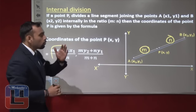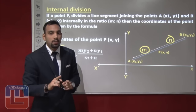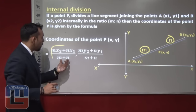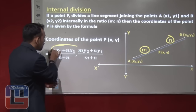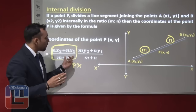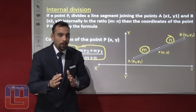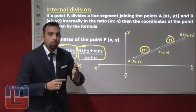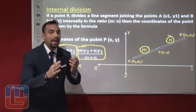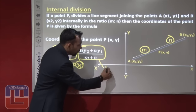What does the formula exactly say? If this is M ratio N and we have to find the coordinate of P, so X will be equal to MX2 plus NX1 on M plus N. This formula will give the value of X. As for Y, the formula says: MY2 plus NY1 by M plus N. This formula will give the value of Y. So this formula gives the value of X and this formula gives the value of Y.